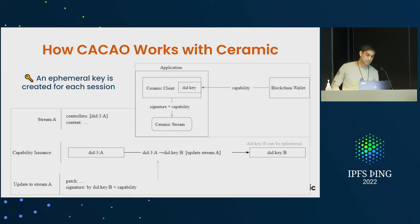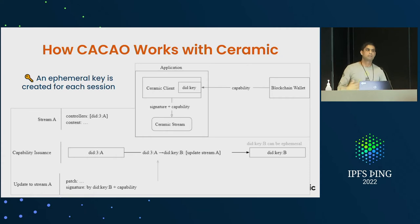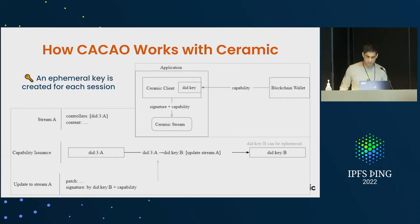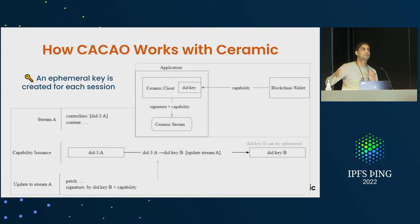This enables interesting use cases like redelegation of permissions. As a blockchain account holder, you can delegate your rights for updating some of your content to a data collective, a privacy watchdog, or a bank you trust. This lets you really tie into existing Web2 applications somewhat seamlessly.